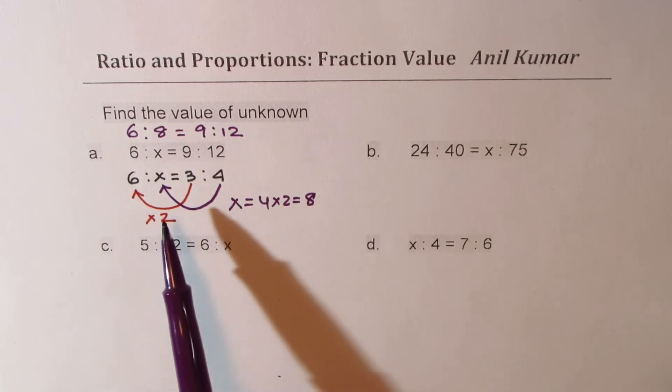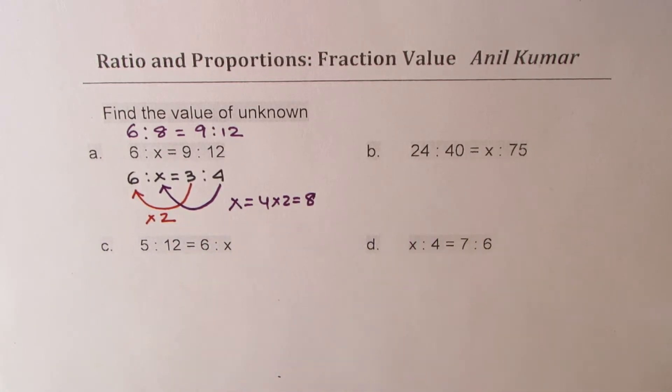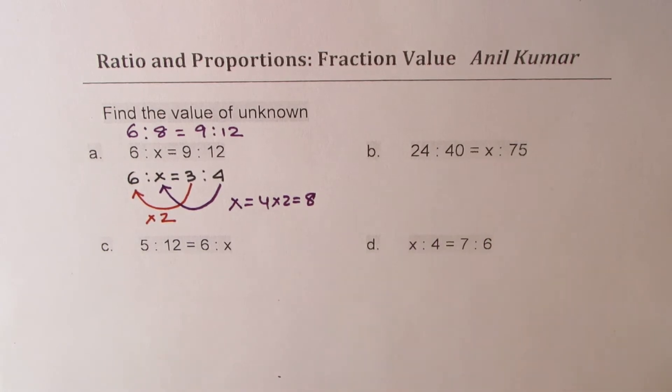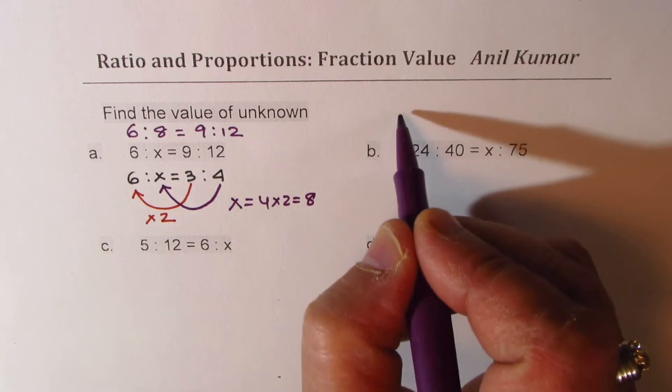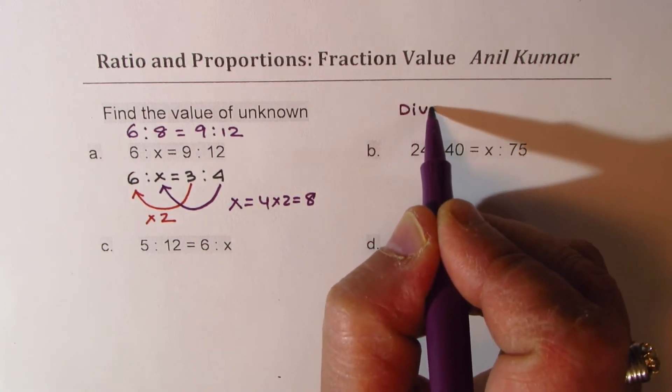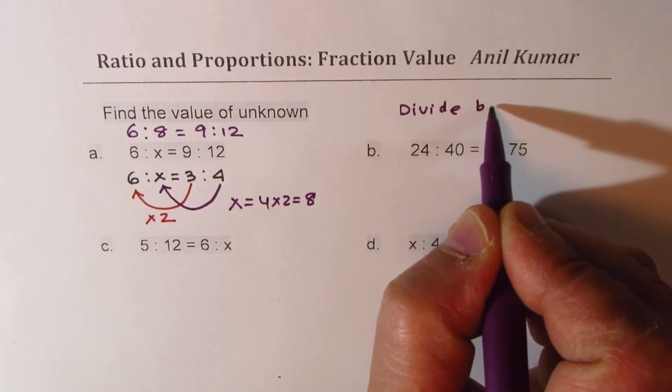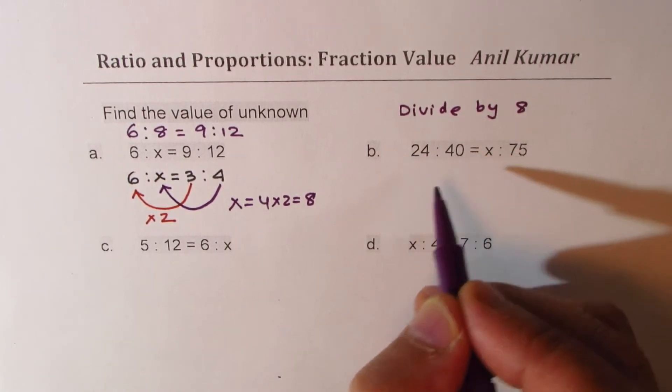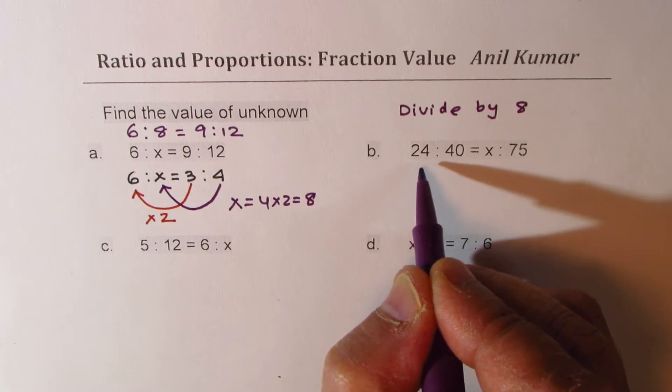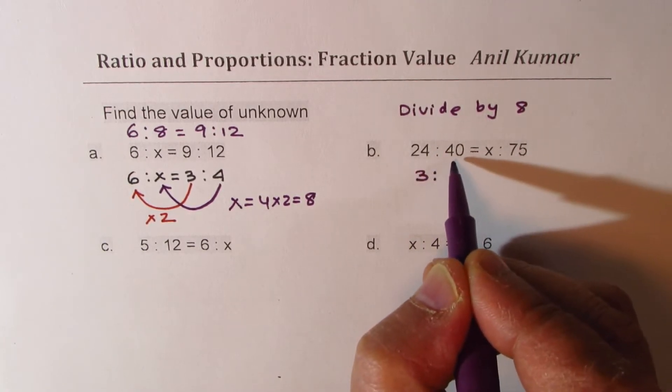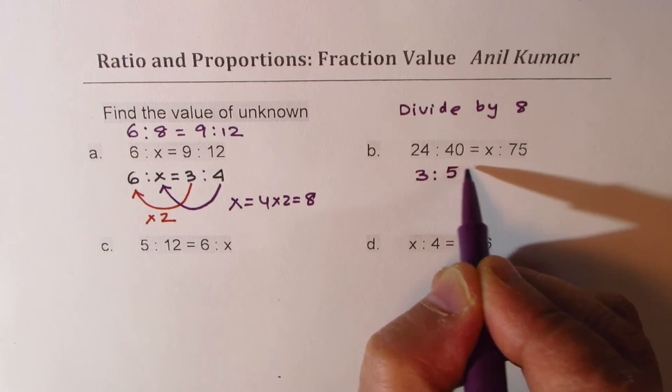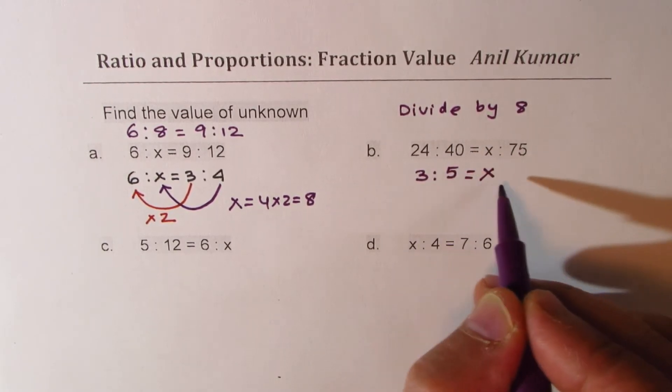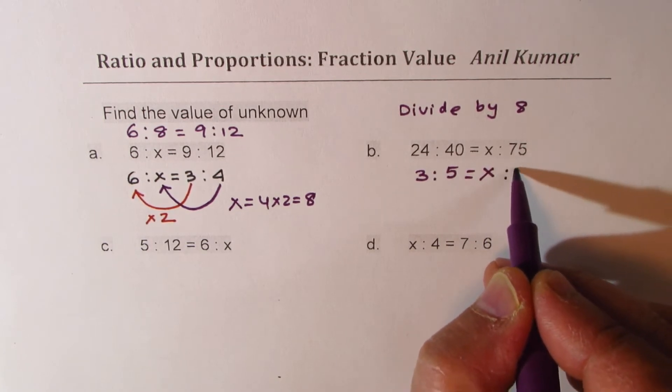I would like you to apply the same strategy in the second example. 24 to 40. So what we could do here is divide by 8. The first two, 24 and 40. So I could write this as 8 times 3 is 24 and 8 times 5 is 40. So this ratio question reduces to 3 is to 5 equals to x is to 75.